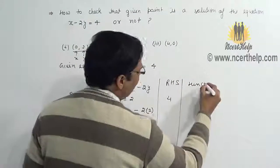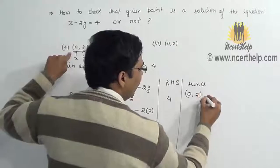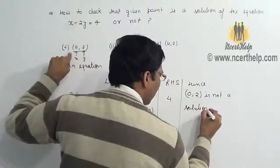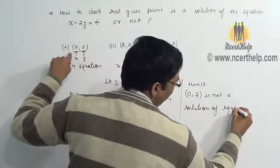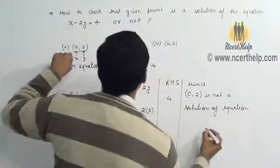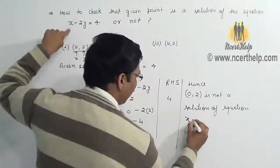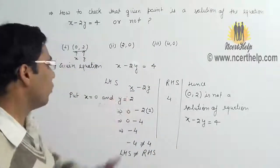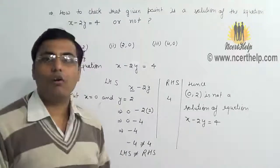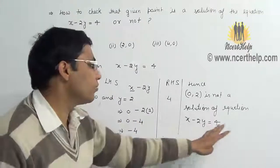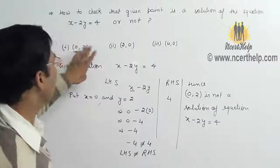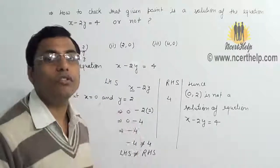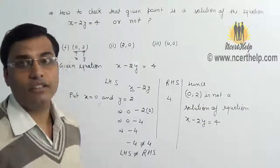Hence the given point 0 comma 2 is not a solution of the given equation x minus 2y equals 4. With this method we can check that the given point is a solution of the given equation or not. In this case, 0 comma 2 is not a solution set of the given equation. Now check for the second point.